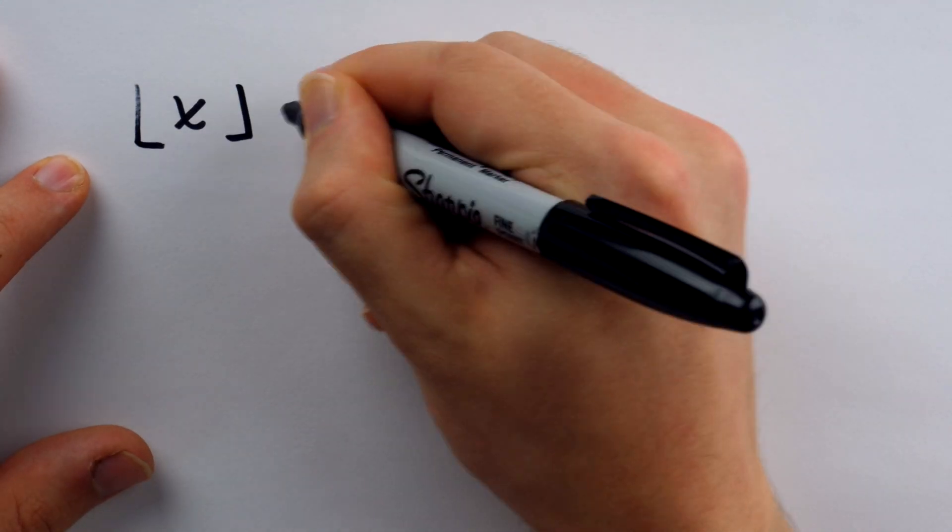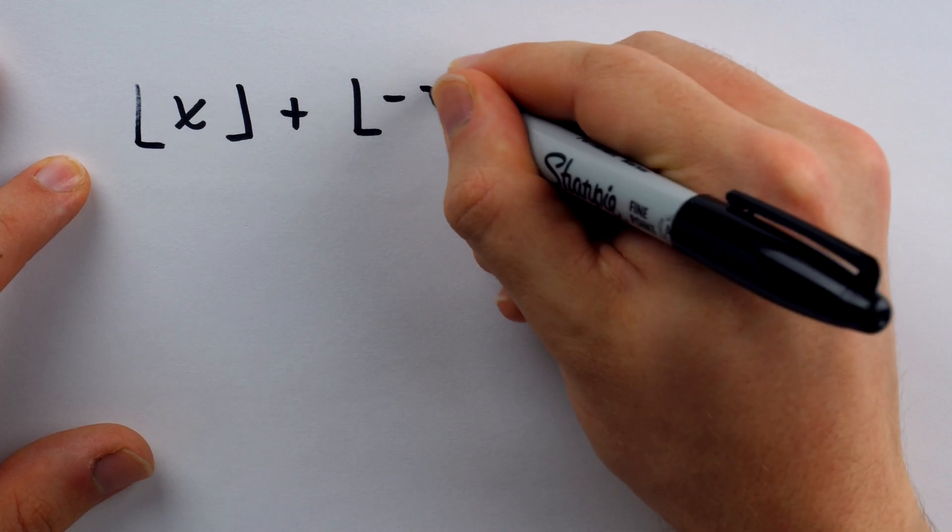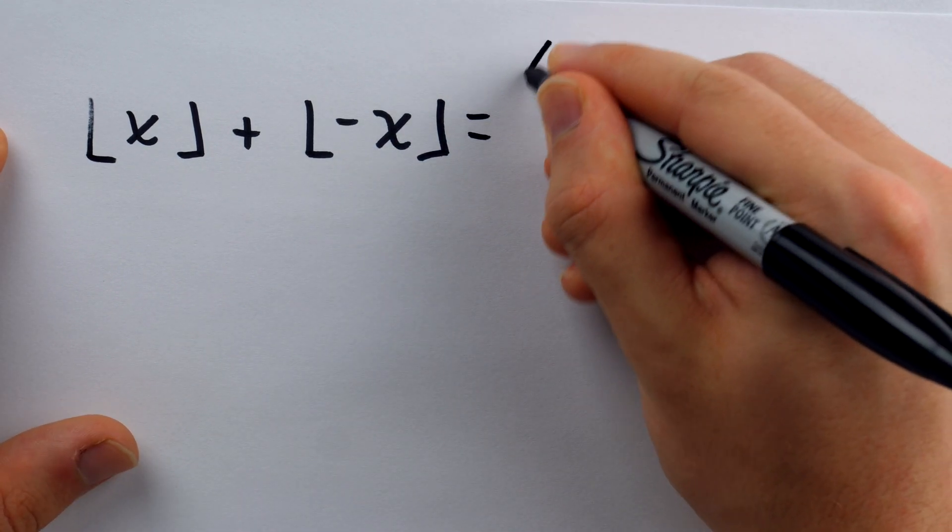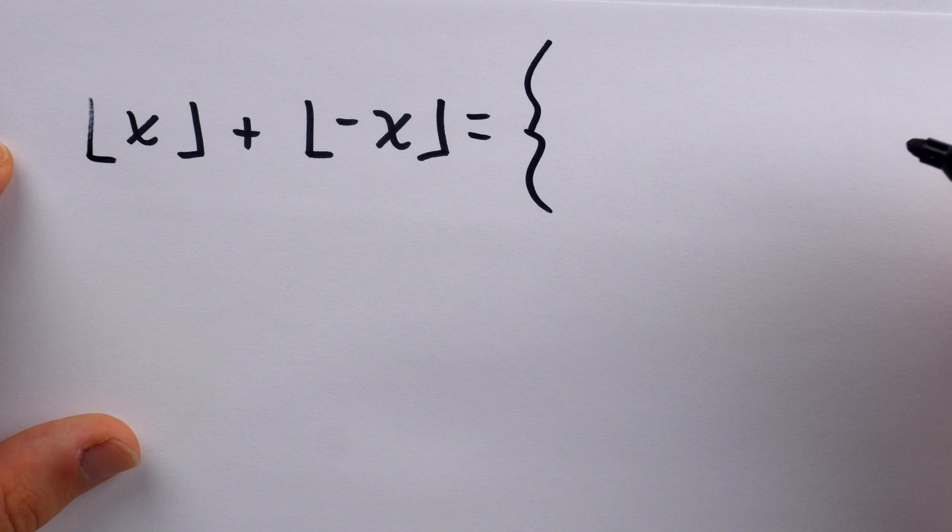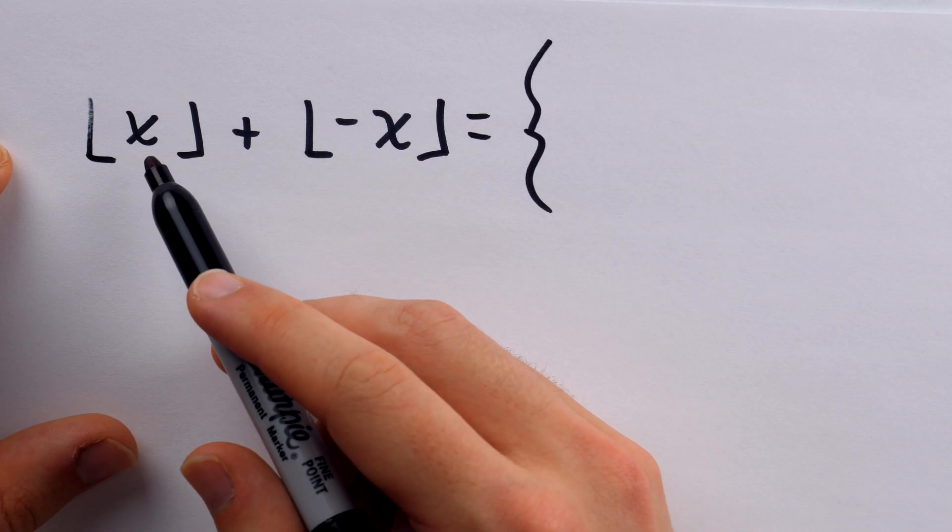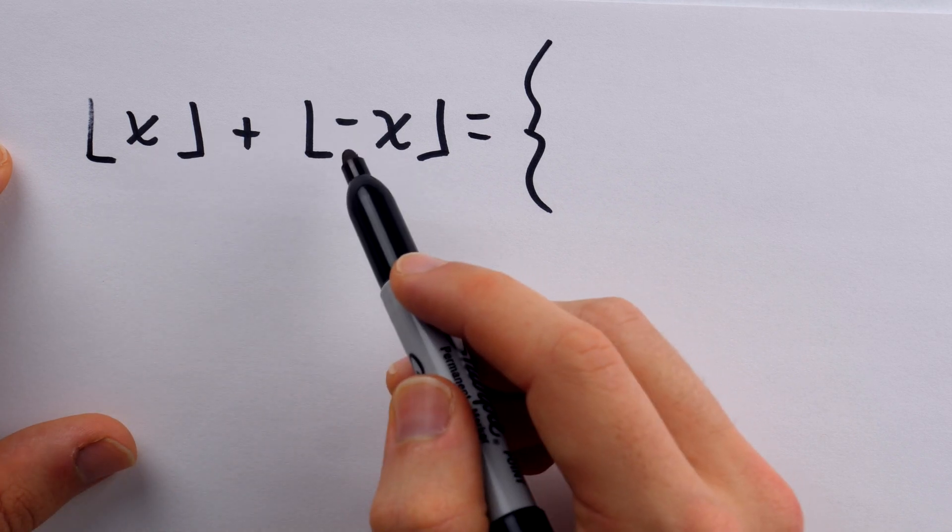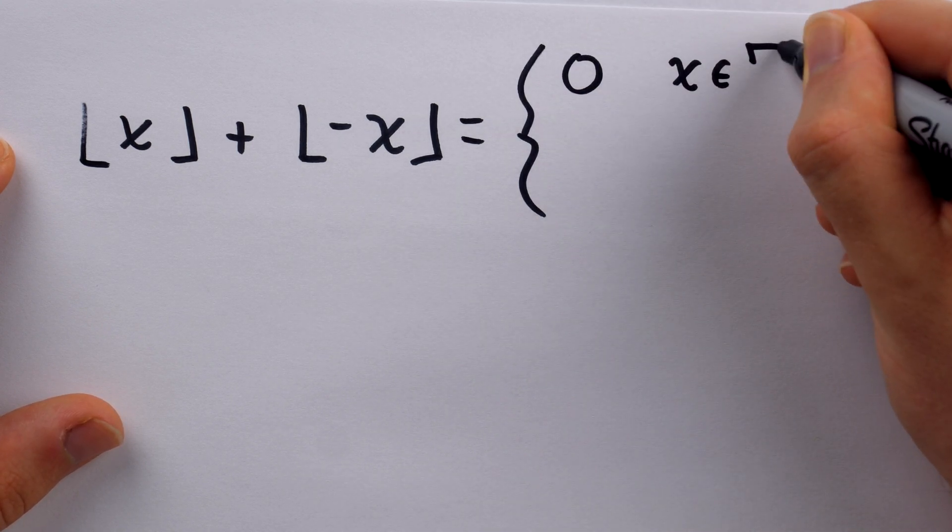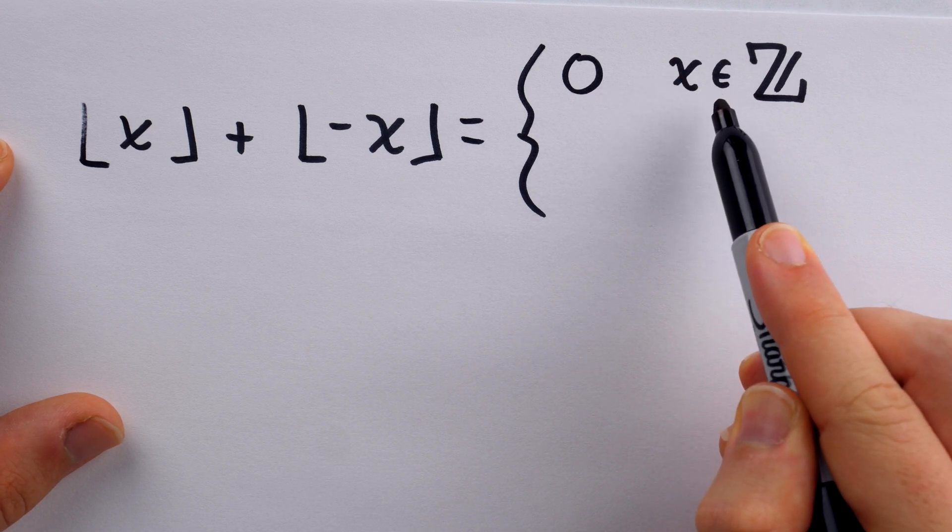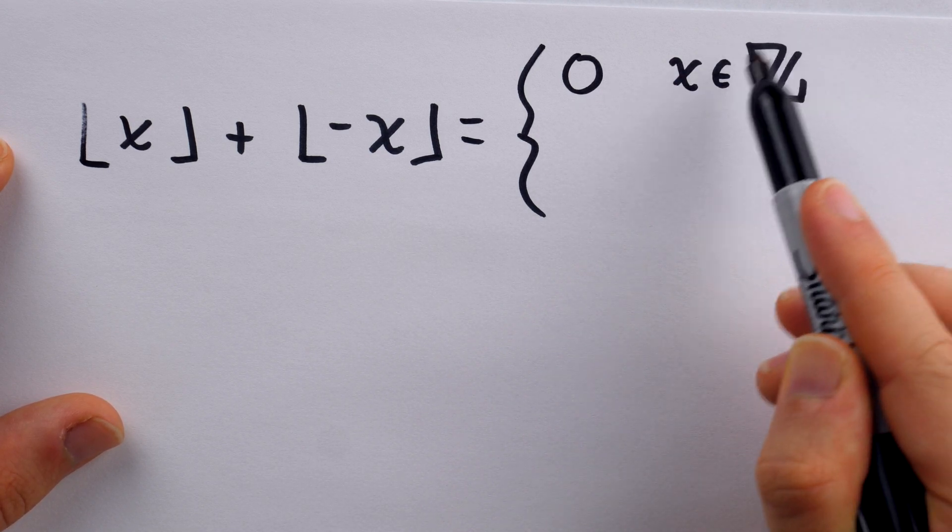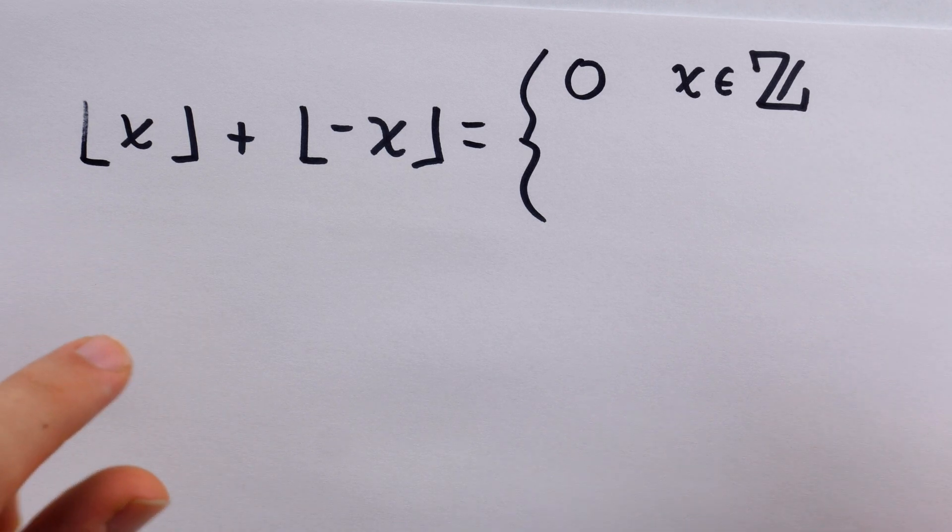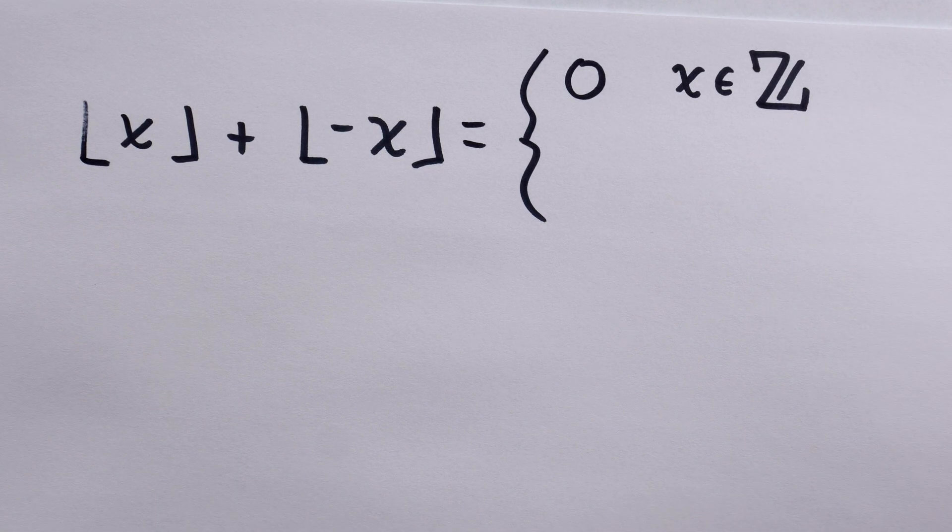One last interesting fact about the floor function we'll look at is what happens if we take the floor of x and add it to the floor of the negation of x. So we're looking at the floor of x plus the floor of negative x. What is this equal to? Well, it turns out there's only two things it can possibly equal. In the case where x is an integer, you may be able to quickly see that this is going to be 0. So it's equal to 0 if x is an integer. This notation means that x belongs to the set of integers. This represents all of the integers. Otherwise, if x isn't an integer, we can just imagine plugging in a value.